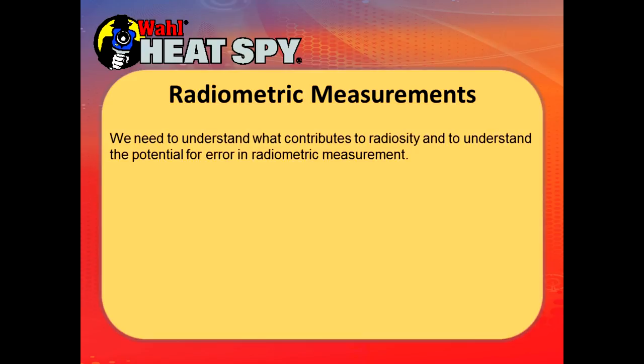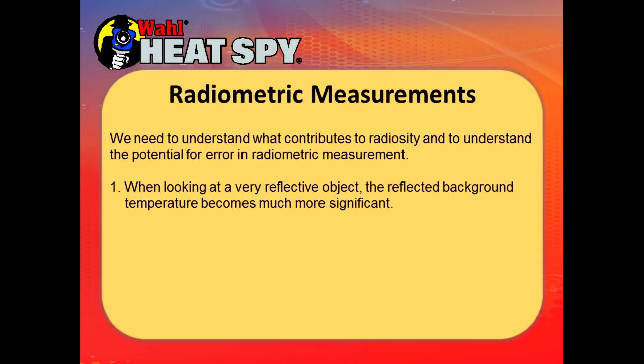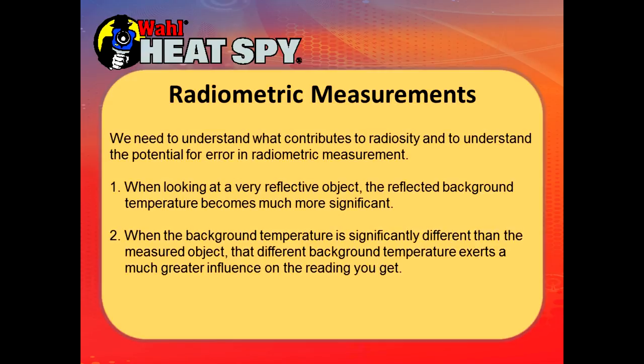You need to understand what contributes to radiosity and understand the potential for error in radiometric measurement. When looking at a very reflective object, the reflective background temperature is much more significant when the background temperature is significantly different than the measured object — that different background exerts a much greater influence on the reading you get.